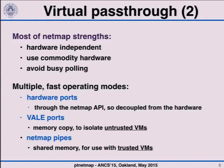Using the things that NetMap already does, and exporting the communication paths of NetMap to virtual machines, we can achieve a virtual pass-through for hardware ports by passing a NetMap port that talks to hardware to a virtual machine. If we export Vale ports, Vale ports work by memory copy, so we have isolation between virtual machines and can have untrusted virtual machines talk to each other. If we export NetMap pipes, NetMap pipes use shared memory to exchange communication — they don't copy packets, they just swap pointers — and therefore we can have communication between trusted virtual machines.